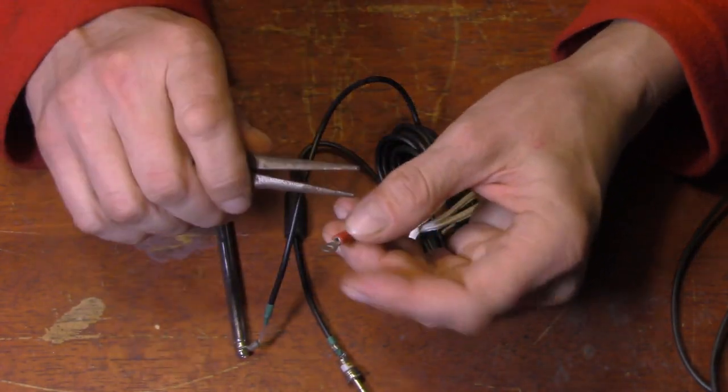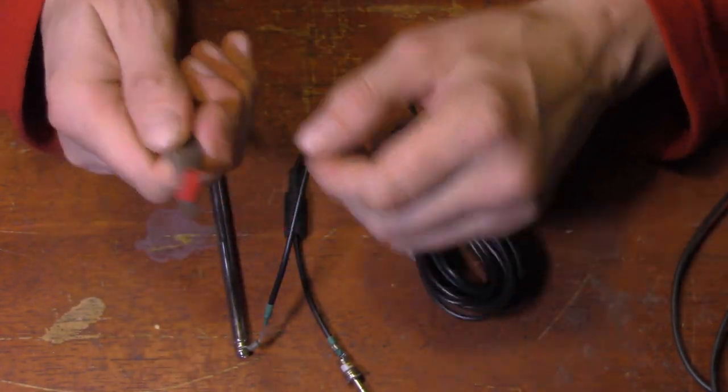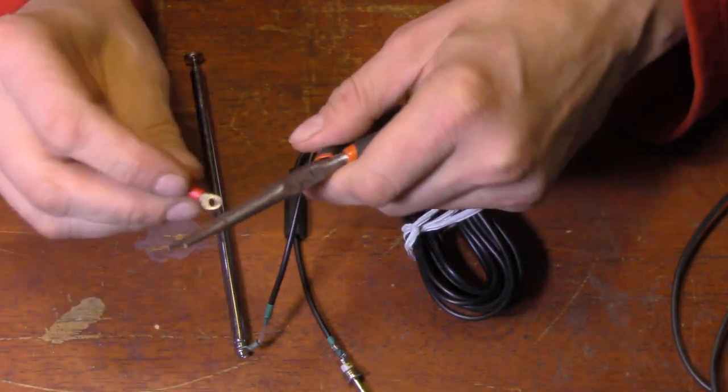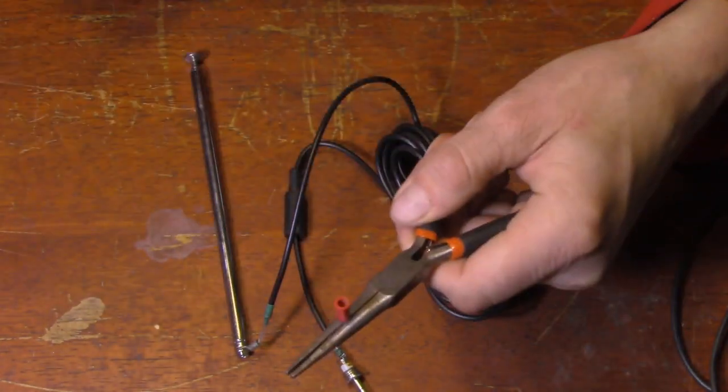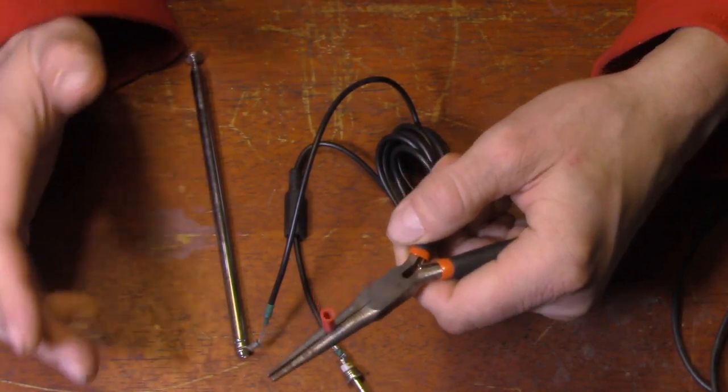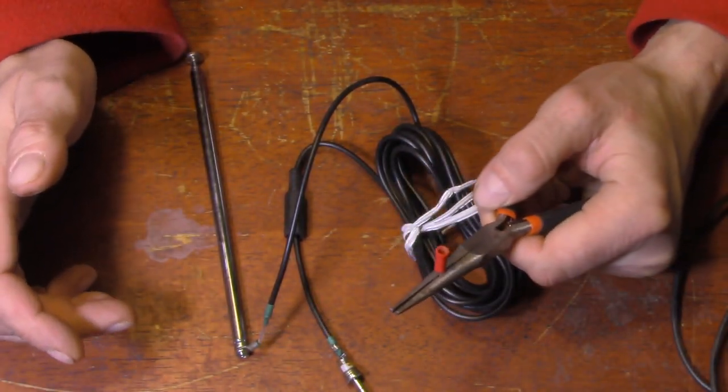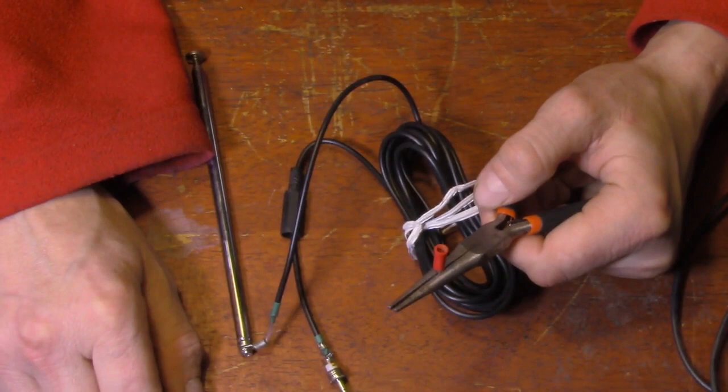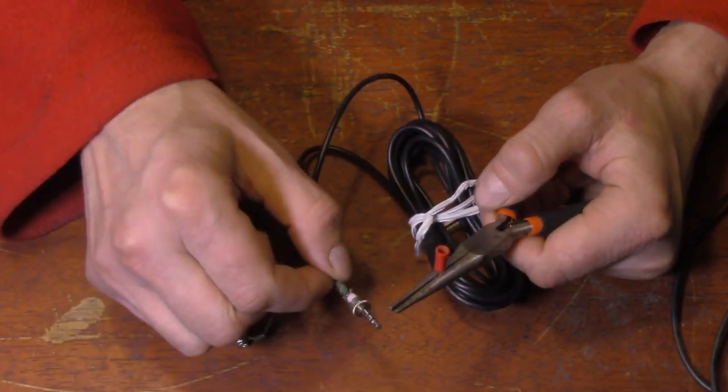You're going to need one of these little crimp-on eyelet connectors. Now, if you get one, in my case, it had plastic on it. We don't want that because we're going to solder this instead of crimp it. You could crimp it if you don't have the capability to solder, but you're going to kind of really need to solder this.